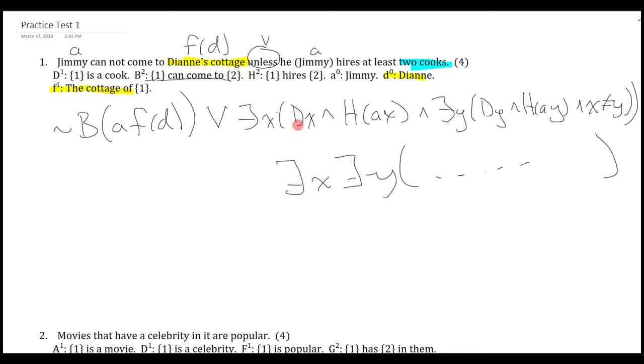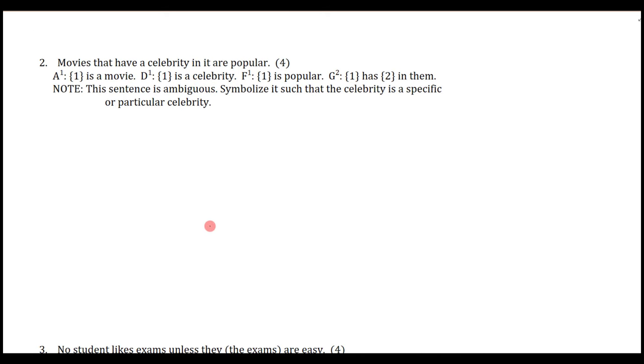Okay, so the only real sort of variant on this is to change the unless to if not one, then the other, and that's that. Okay, question two. Movies that have a celebrity in it are popular. Note this sentence is ambiguous. Symbolize it such that the celebrity is a specific or particular celebrity.